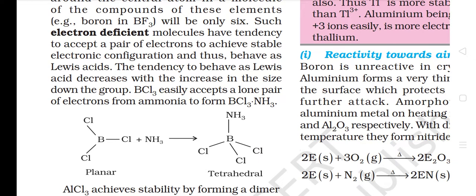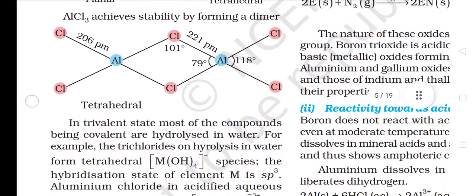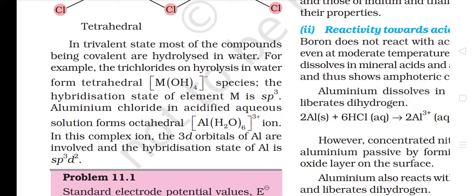BCl3 easily accepts a lone pair of electrons from ammonia to form BCl3·NH3. AlCl3 achieves stability by forming a dimer. In the trivalent state, most of the compounds being covalent are hydrolyzed in water. For example, the trichlorides on hydrolysis in water form tetrahedral species, with the hybridization state of element M being sp3. Aluminium chloride in acidified aqueous solution forms an octahedral ion, where the 3d orbitals of aluminum are involved and the hybridization state of aluminum is sp3d2.